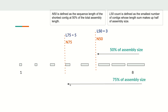Similarly for N75, we find how many contigs from longest down form 75 percent of the assembly size. If five contigs reach that threshold, then L75 equals 5 and N75 is the length of that fifth contig. N75 will always be less than N50 because we are ordering contigs from short to long, so the fifth contig is shorter. Correspondingly, L75 is greater than L50 because more contigs are added.